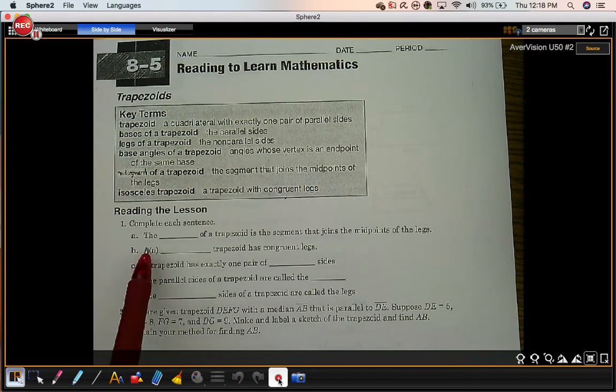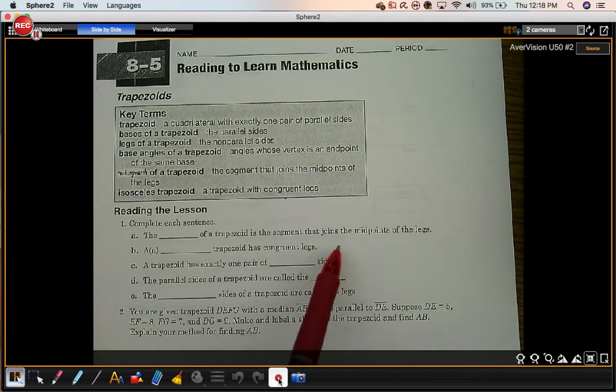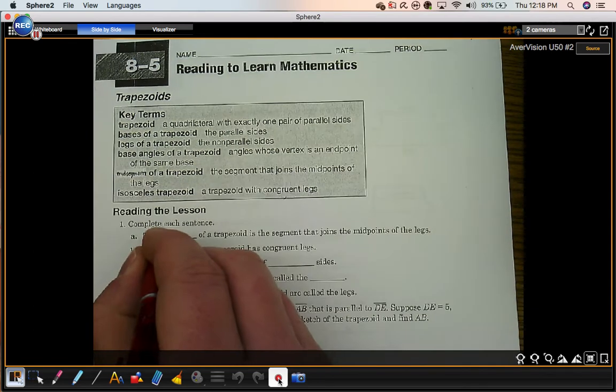Number one, part A: The blank of a trapezoid is a segment that joins the midpoints of the legs. That's our midsegment.